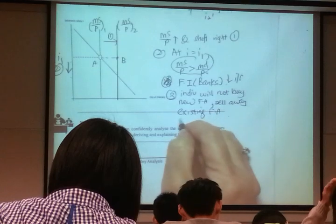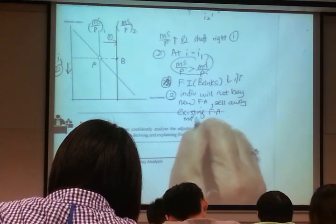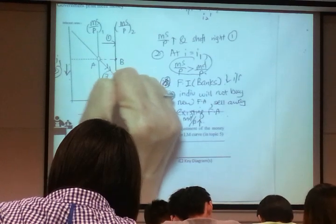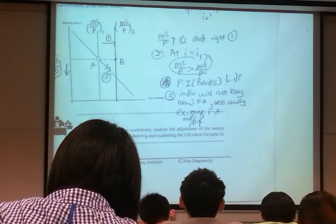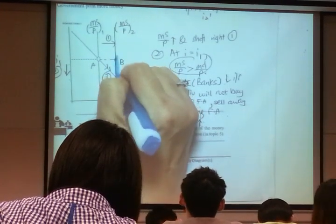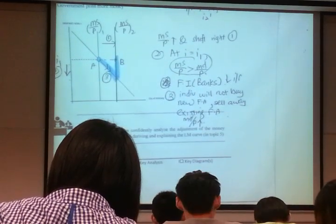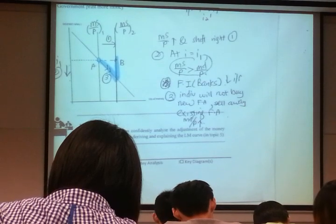So if you sell away, therefore your money demand will go up, which is here. So see carefully, this is your money supply. Your money demand starts to increase.